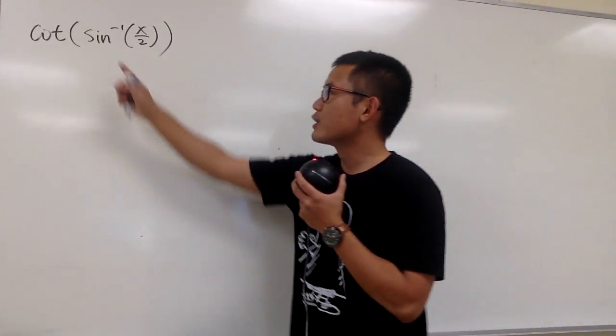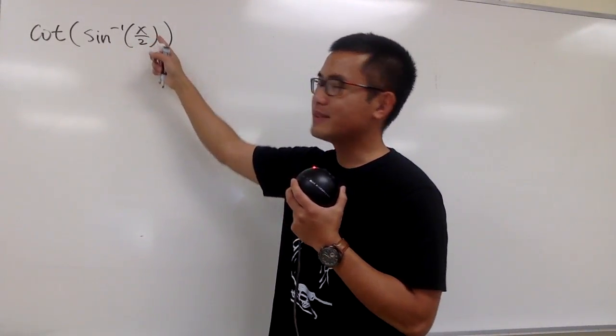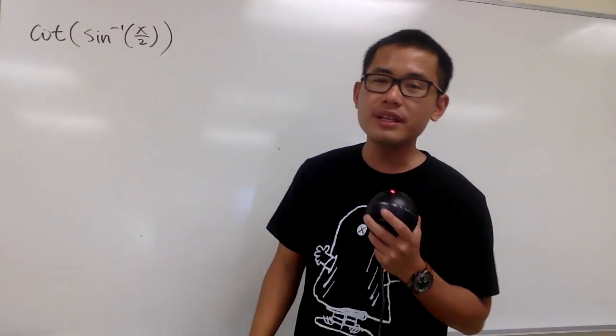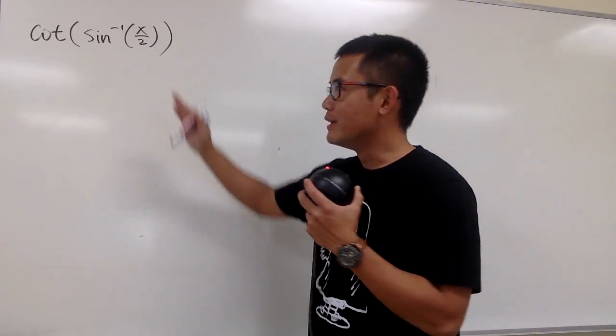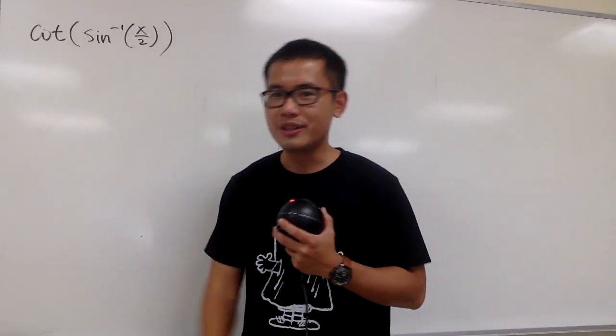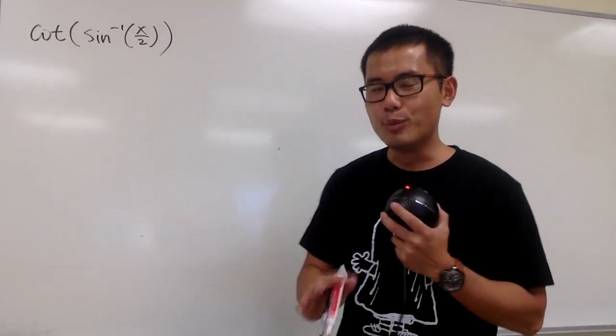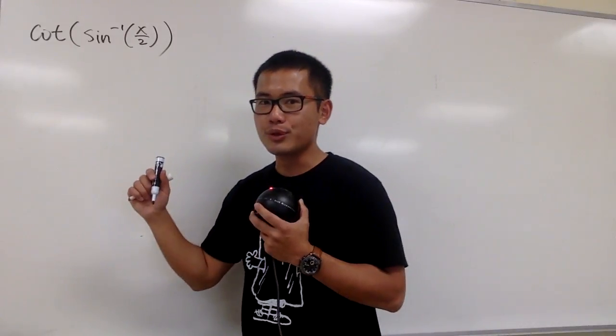Okay, I'm going to show you guys how to write cotangent of inverse sine of x over 2 as an algebraic expression, and that means at the end for our answer, we cannot have any more inverse sine or cotangent - no more trig functions, no more inverse trig functions either. And this is how we're going to do it.